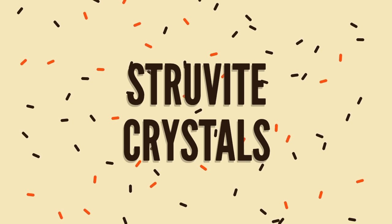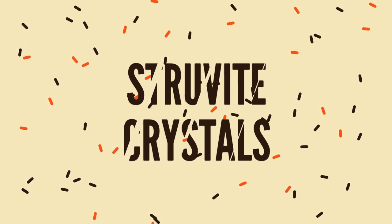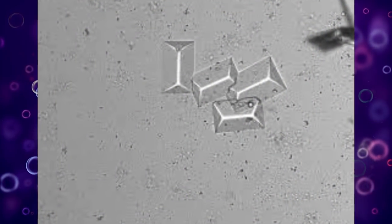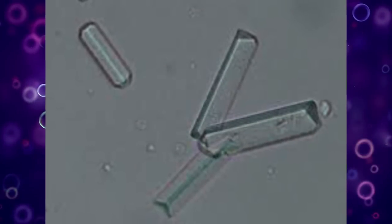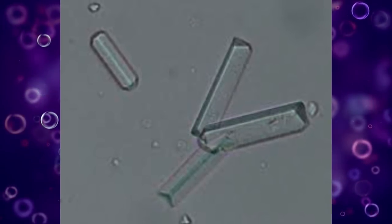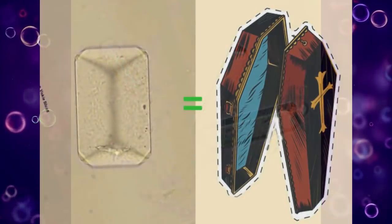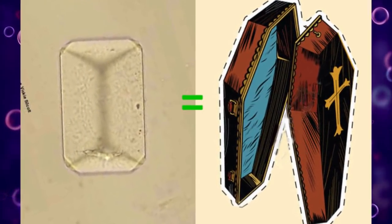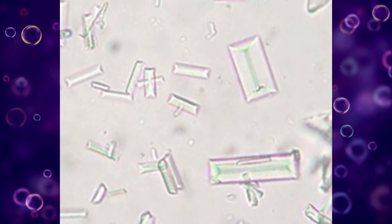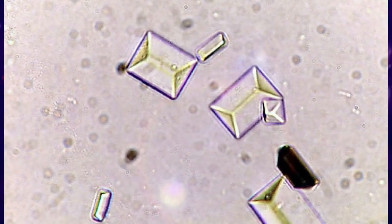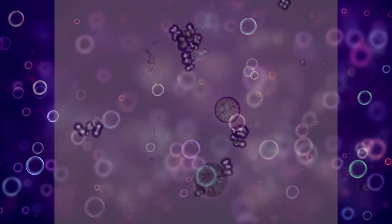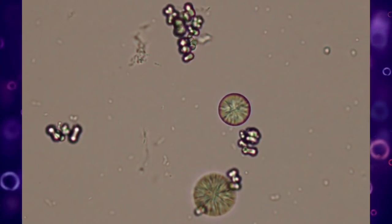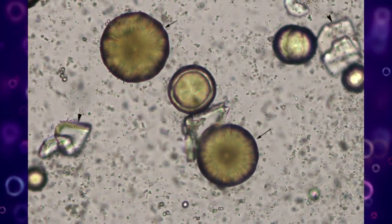Triple phosphate crystals, or struvite, form in alkaline urine and are composed of magnesium, ammonium, and phosphate. These are rectangular in shape, similar to a coffin lid, and are sometimes associated with a bacterial urinary tract infection caused by urea-splitting bacteria.